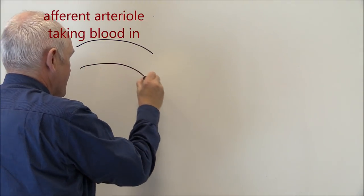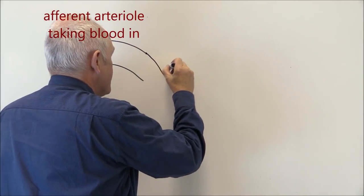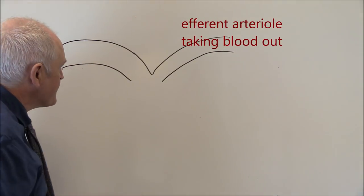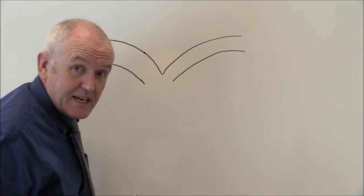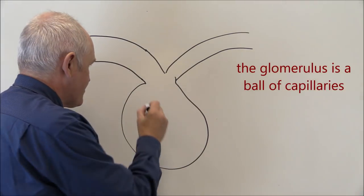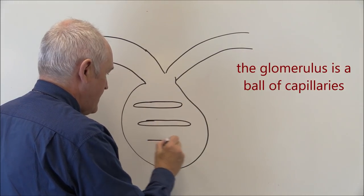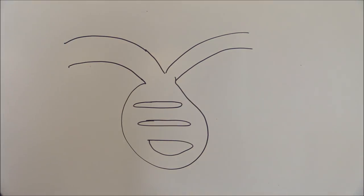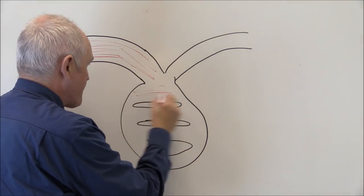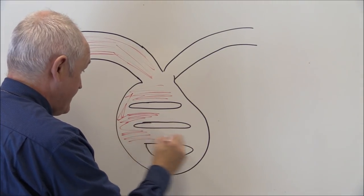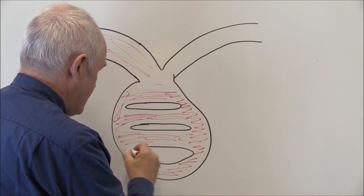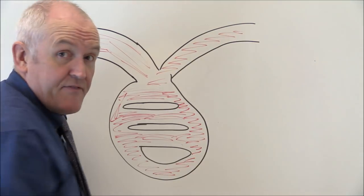Here we have the afferent arteriole, and as you probably know there is an efferent arteriole as well. The efferent arteriole tends to be a bit thinner than the afferent arteriole. The afferent arteriole is taking blood into the glomerulus, which is a ball of capillaries — a complex ball of capillaries. The blood travels through those capillaries and leaves via the efferent arteriole.